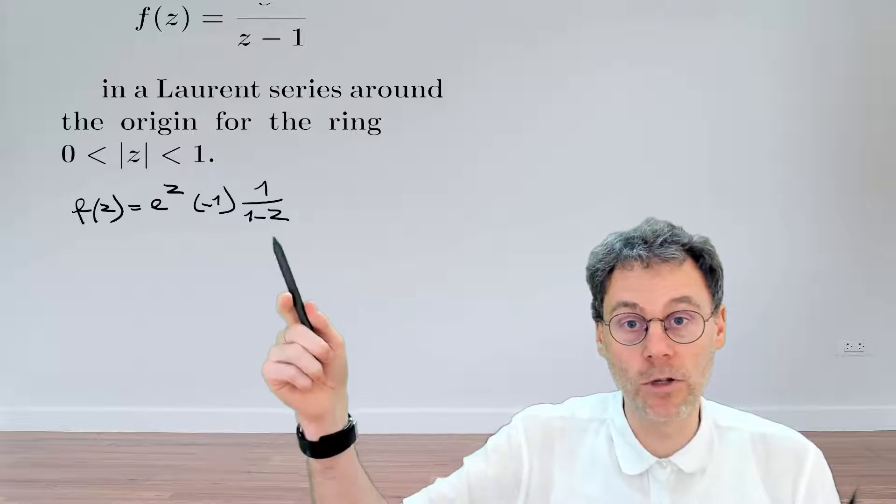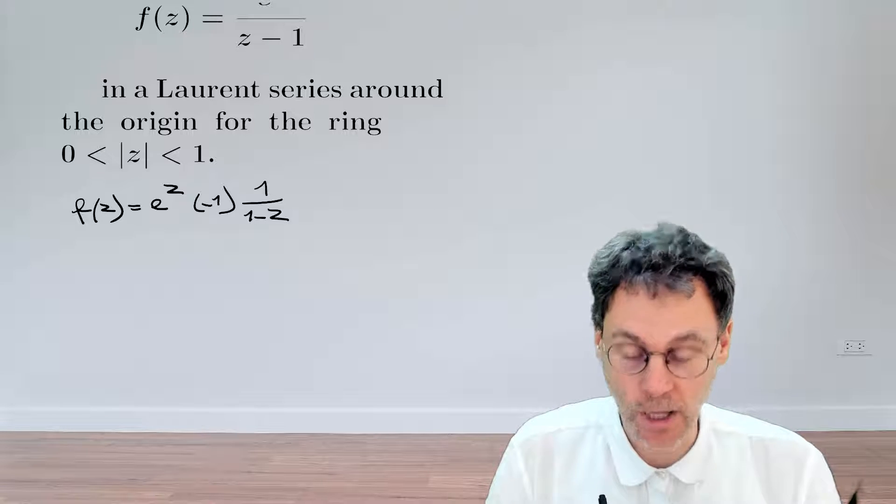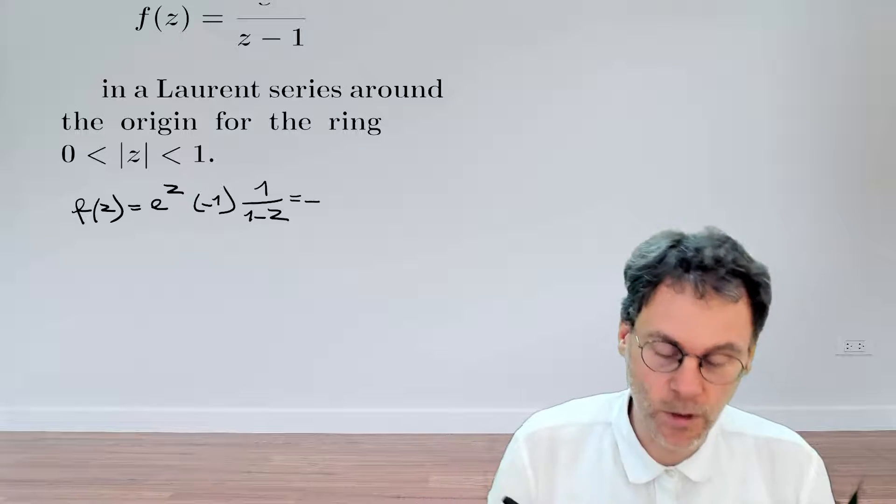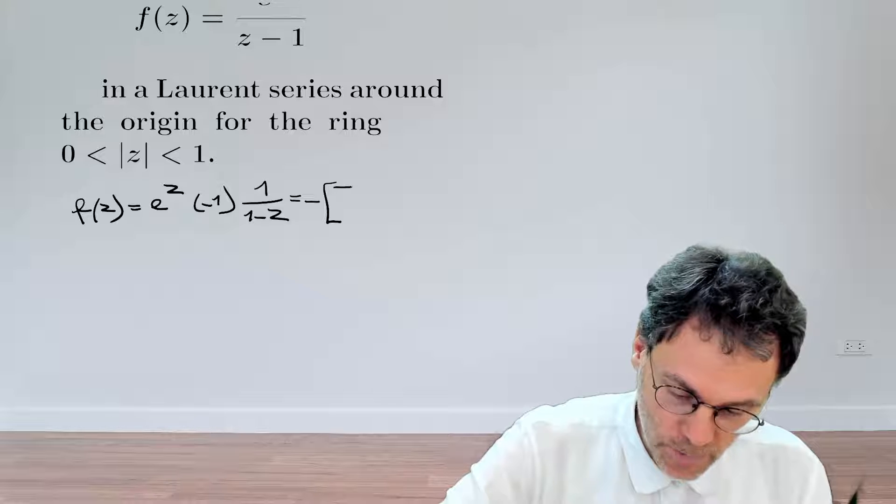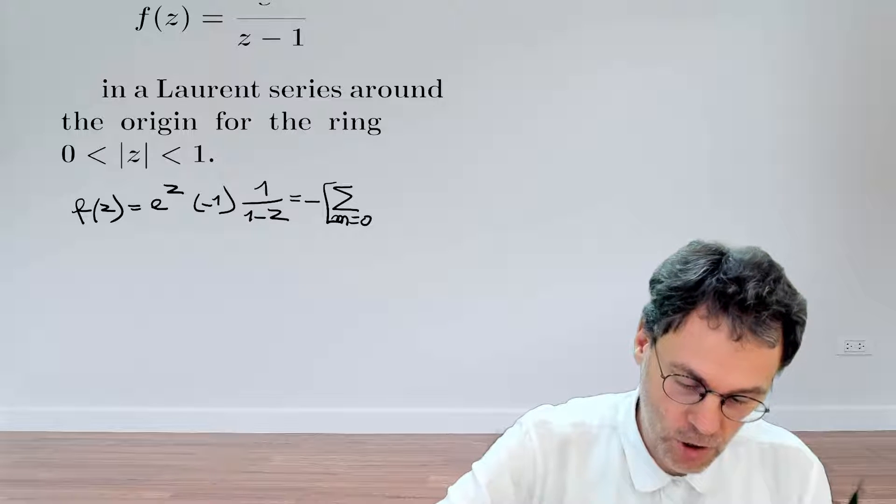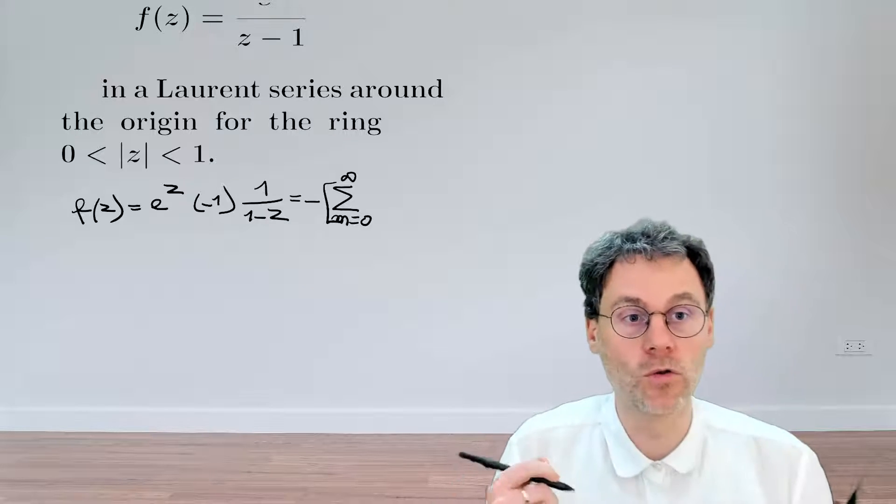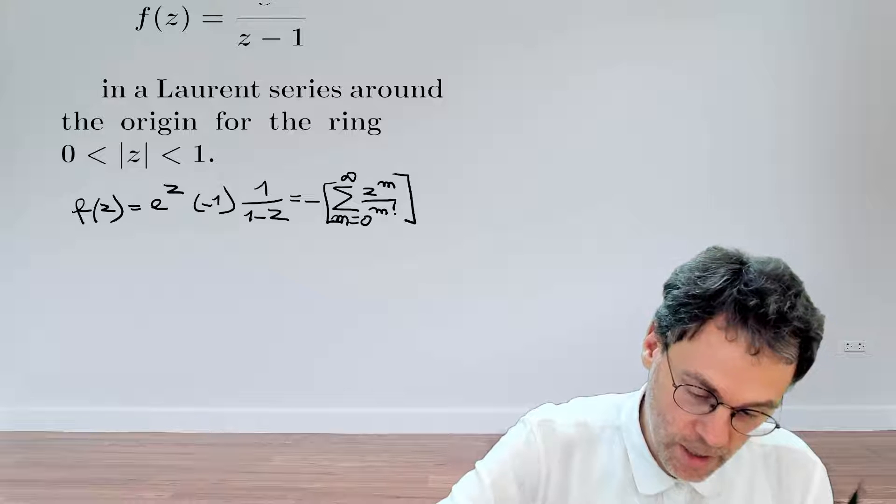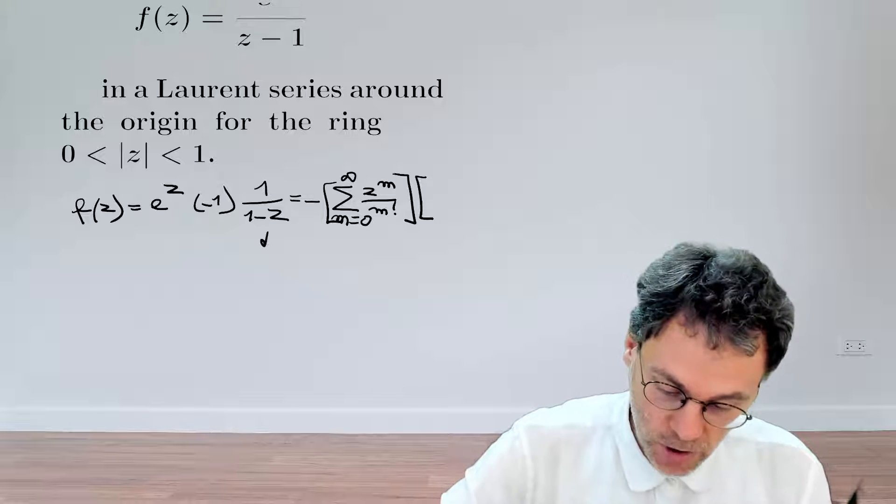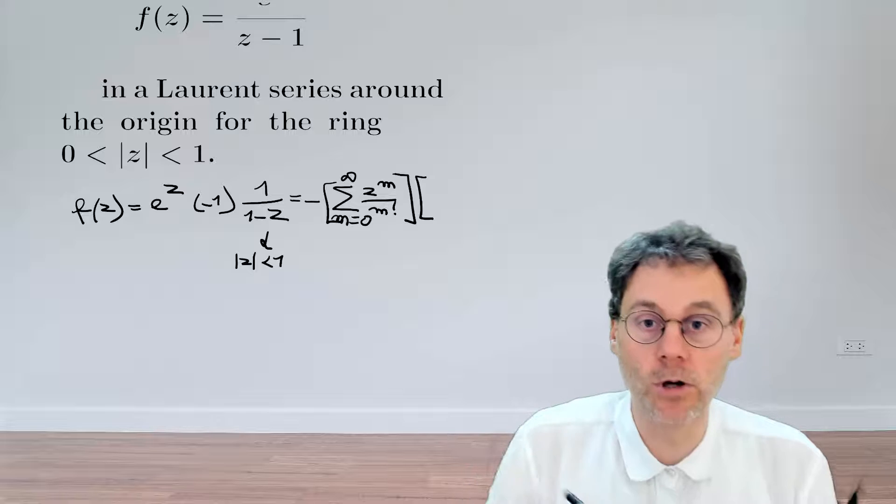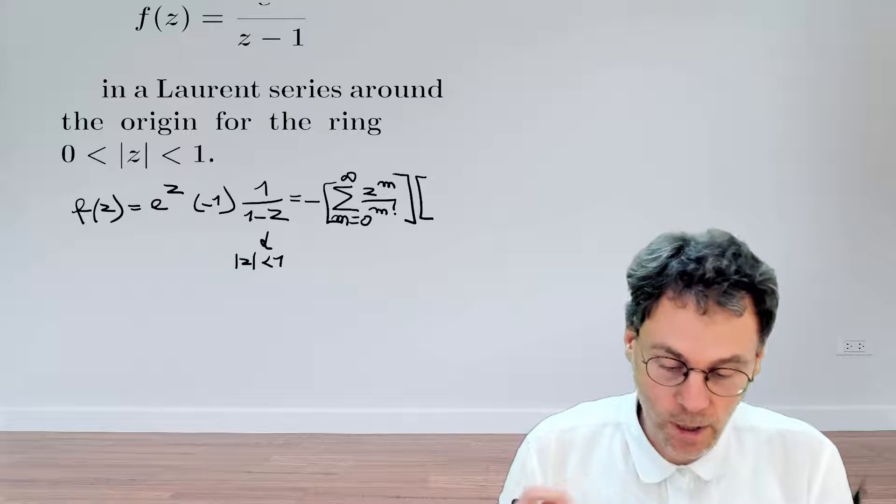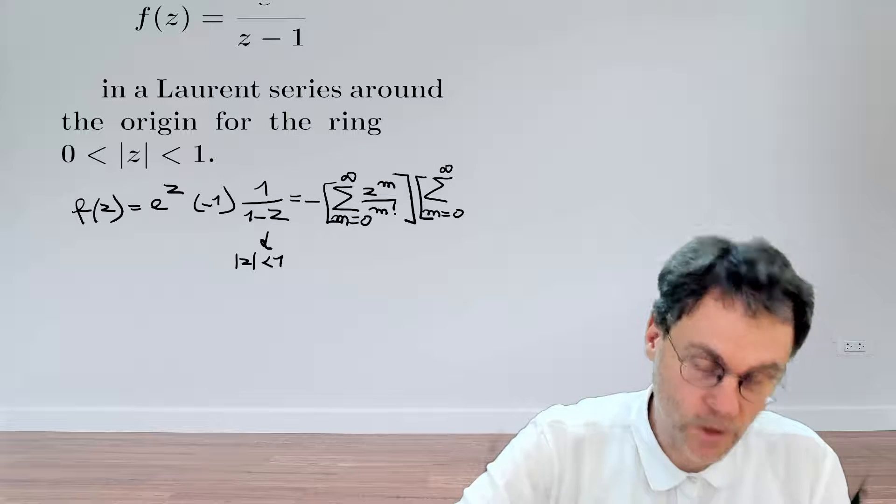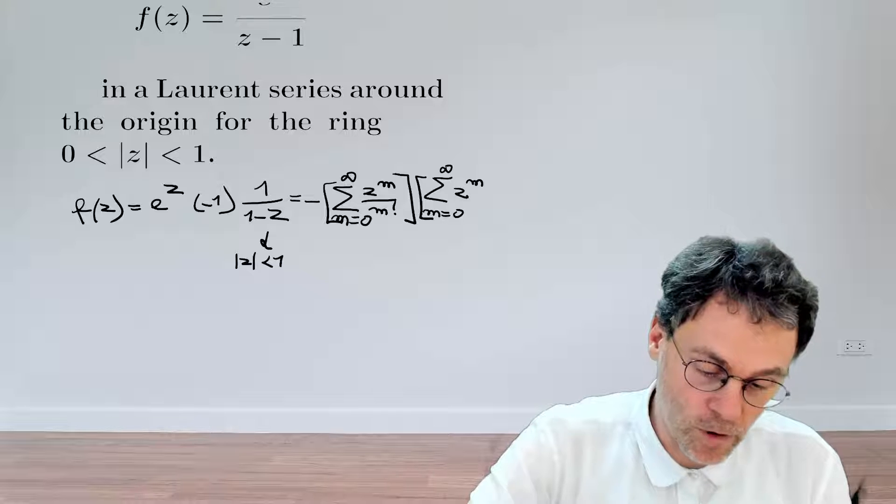Specifically, if the magnitude of z is smaller than 1, we have a series expansion that converges. So we would be tempted to write down that this is equal to minus the product of two series expansions. The first one is the summation of m going from 0 to infinity of z to the power of m divided by m factorial. And then a second series expansion that we can write down again because the modulus of z is smaller than 1. So we can write down a series expansion of m going from 0 to infinity of just z to the power of m.